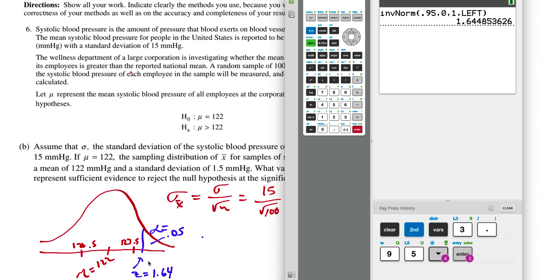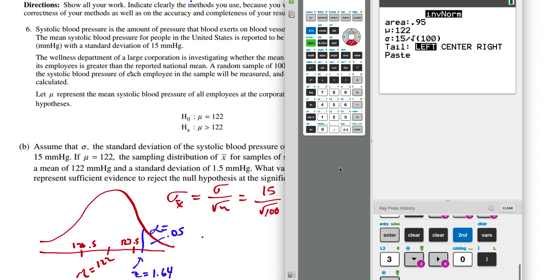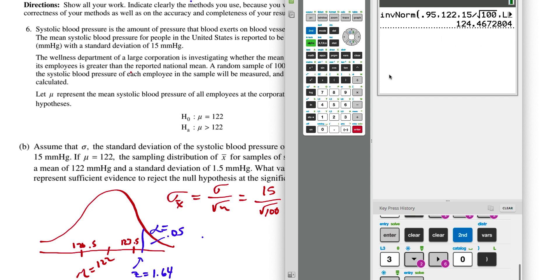So I label that on the curve, and they don't want to know the z-score. They want to know actually what values of x-bar. So back to the calculator I go, put in the area, mean, standard deviation. I like to just put it in as they give it to me here. And we get a value of 124.467.